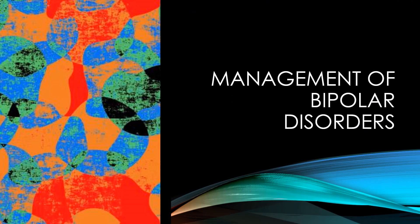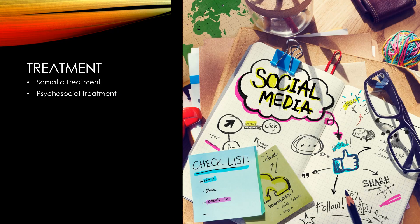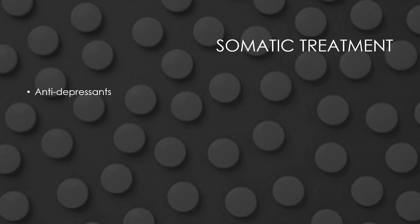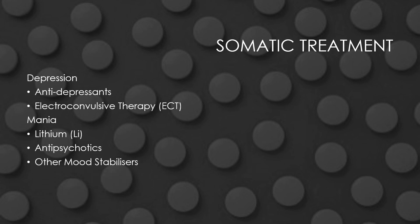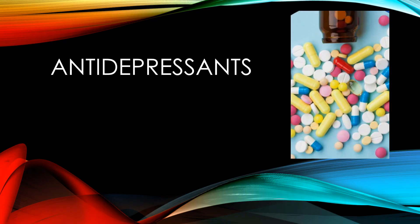Now let us go to management. Management can be divided into somatic and psychosocial. In somatic treatment for depression, we have antidepressants and other treatments like electroconvulsive therapy or ECT. For mania, we have lithium, antipsychotics, and other mood stabilizers.